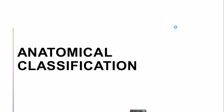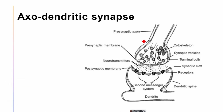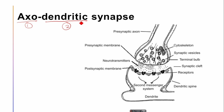On the basis of anatomical classification, we have the axodendritic synapse. Axodendritic synapse means the axon of one neuron connects with the dendrite of another neuron.